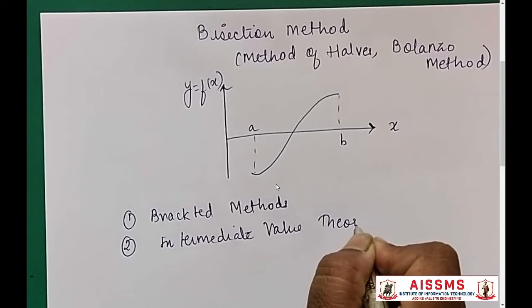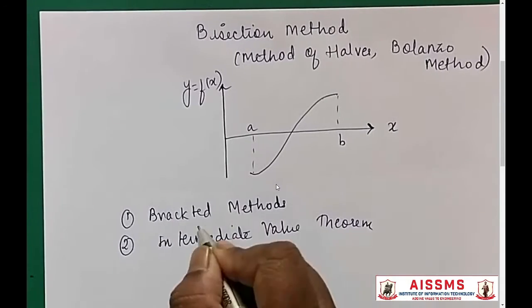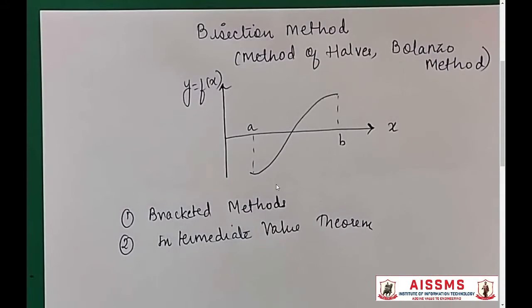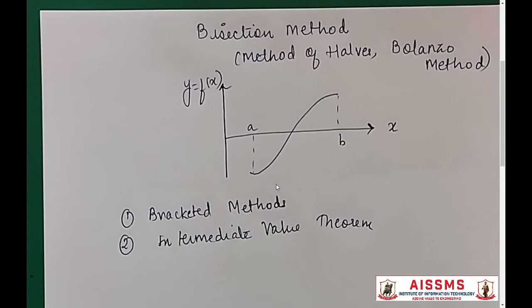What does this theorem state? This theorem states that if any function is continuous in the interval [a, b], and if f(a) and f(b) are of opposite sign, then there exists at least one root between a and b.